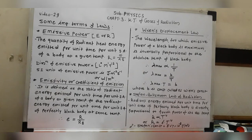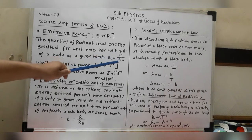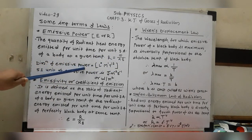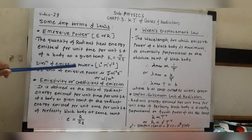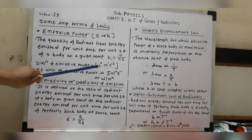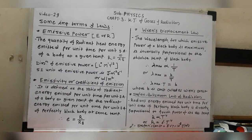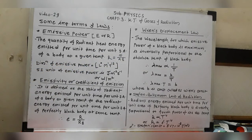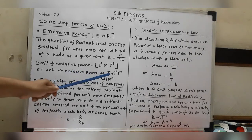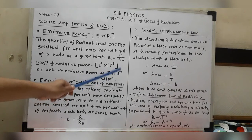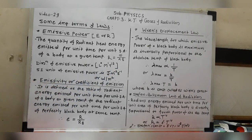The dimension of emissive power from the formula R = Q/(A·T) is: L⁰ M¹ T⁻³. The SI unit of emissive power is joule per metre squared per second, which can also be written as J·m⁻²·s⁻¹ or watt per metre squared.